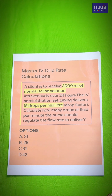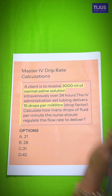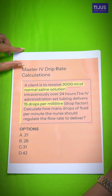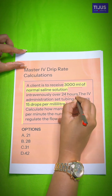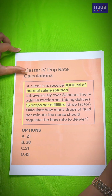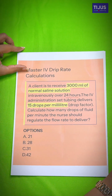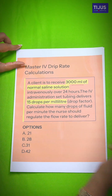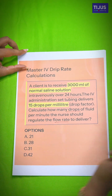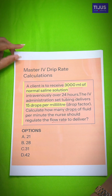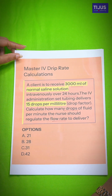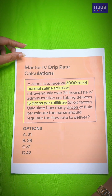IV drip rate calculation. A client needs to receive 3000 ml of normal saline solution intravenously over 24 hours. The IV administration set tubing delivers 15 drops per milliliter. Calculate how many drops of fluid per minute the nurse should regulate the flow rate to deliver. Options are 21, 28, 31, and 42.